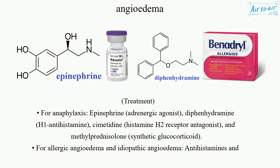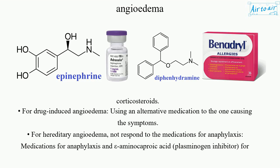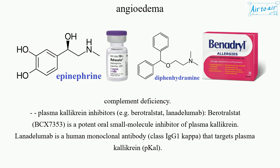For allergic angioedema and idiopathic angioedema: antihistamines and corticosteroids. For drug-induced angioedema: using an alternative medication to the one causing the symptoms. For hereditary angioedema, which does not respond to medications for anaphylaxis: epsilon-aminocaproic acid (plasminogen inhibitor) for complement deficiency.